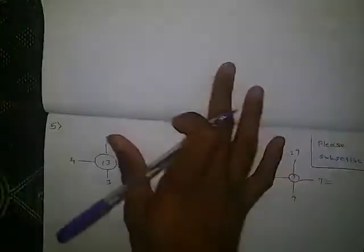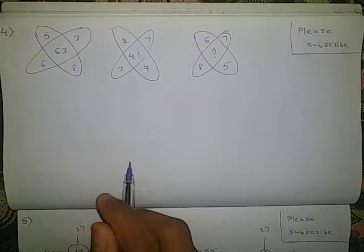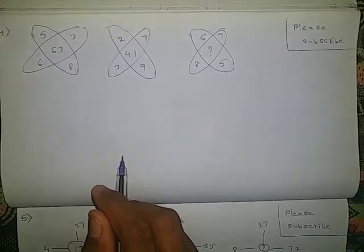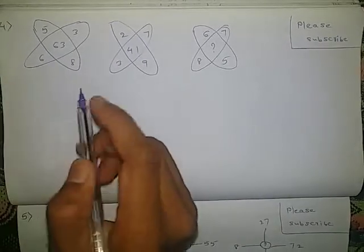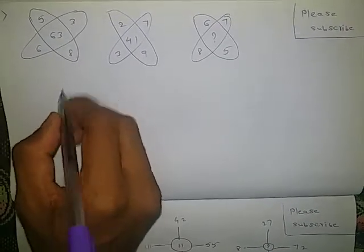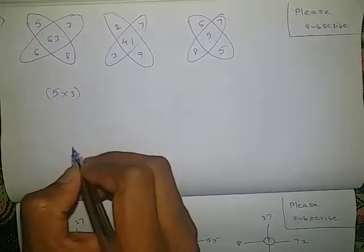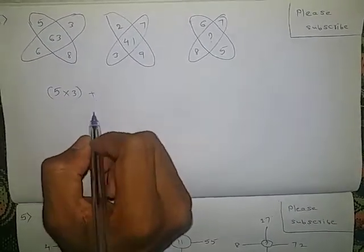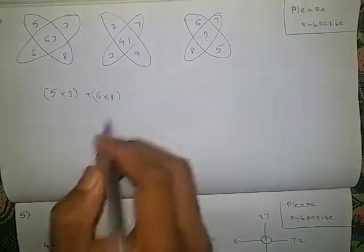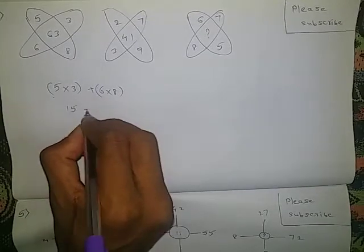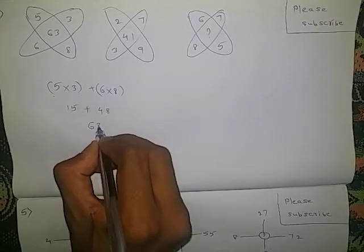Let us look at one more question. 5, 3, 6, 8 — middle number is 63. If you observe these numbers: product of the upper 2 plus product of the lower 2. 5 into 3 is 15, plus 6 into 8 is 48. 15 plus 48 is 63.